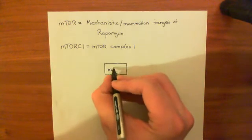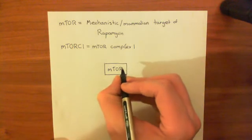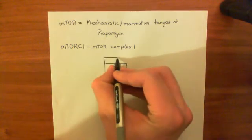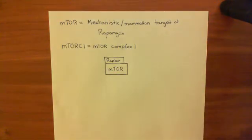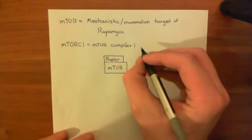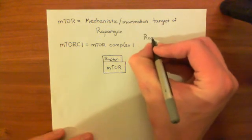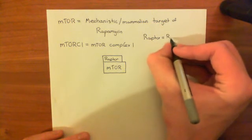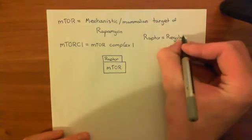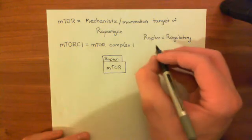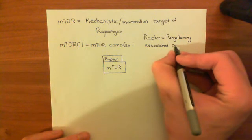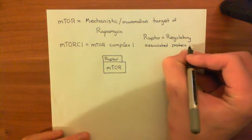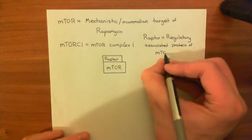So up here we'll have the protein raptor, which stands for the regulatory associated protein of mTOR. So raptor stands for the regulatory associated protein of mTOR. So there are a lot of proteins in this mTORC1 complex. Regulatory associated protein of mTOR. And that's quite a cool name for a protein.